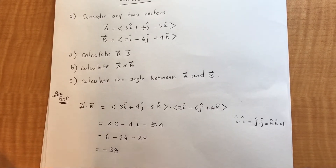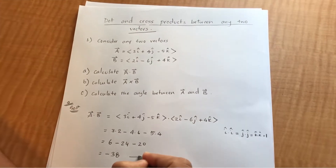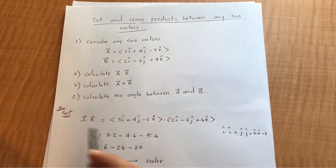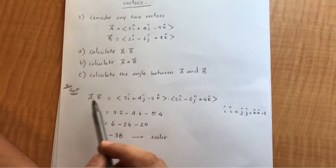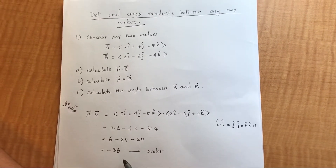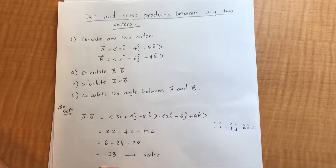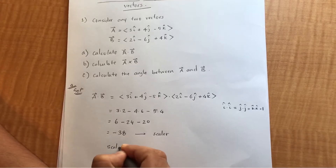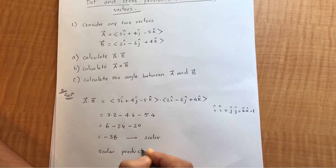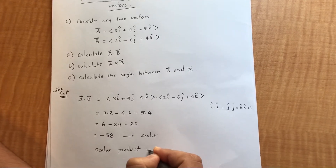That works out to 6 minus 24 minus 20, which equals minus 38. This quantity is a scalar, so whenever you have a dot product of any two vectors you get a scalar quantity. That is why we often call it the scalar product instead of the dot product.